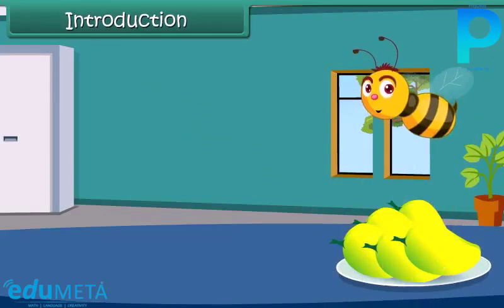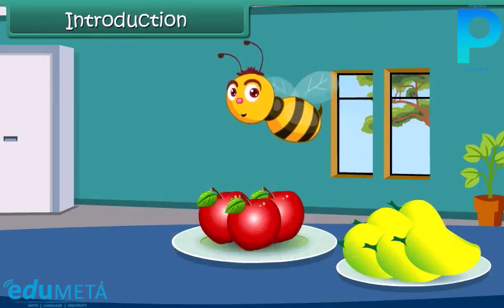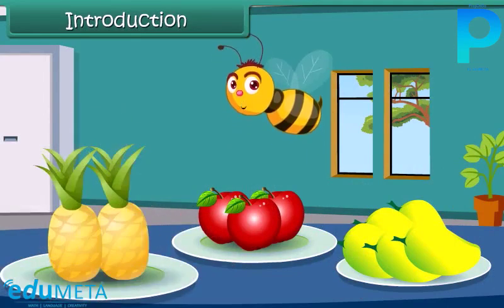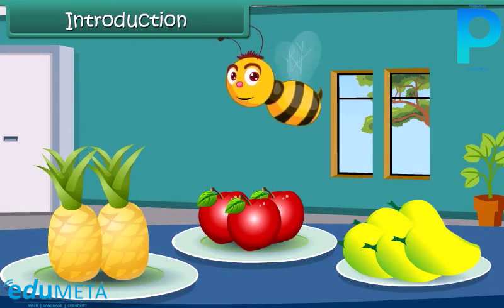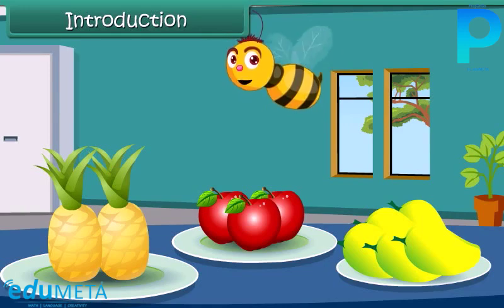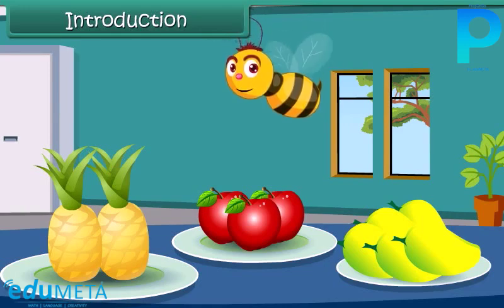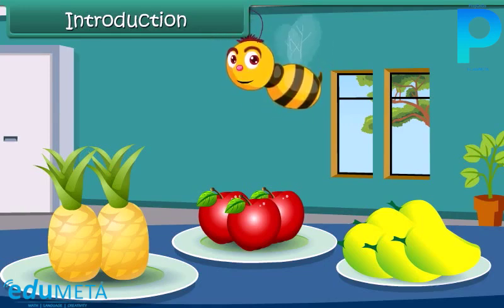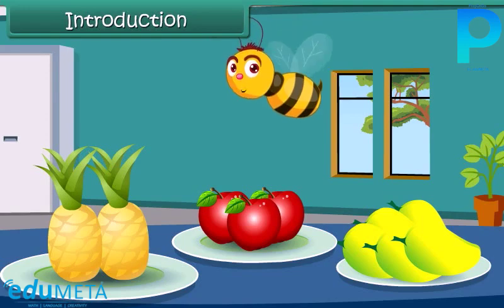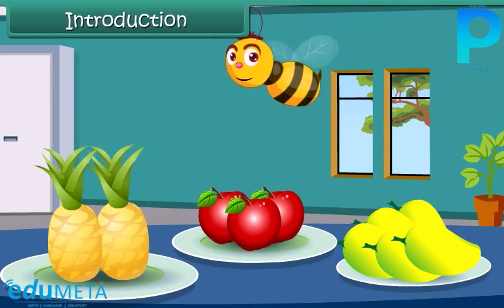Hello friends, here you see some fruits are kept on the table. We have 5 mangoes, 3 apples and 2 pineapples. Describing in this manner is called data representation.